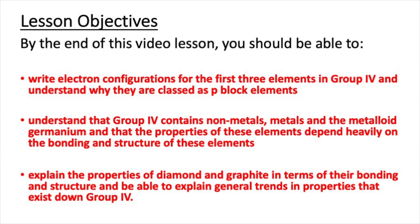You should also be able to understand that group 4 contains non-metals, metals and the metalloid germanium, and that the properties of these elements depend heavily on the bonding and structure of these elements. Finally, you should be able to explain the properties of diamond and graphite in terms of their bonding and structure, and explain general trends in properties that exist down group 4.